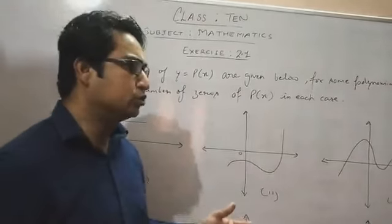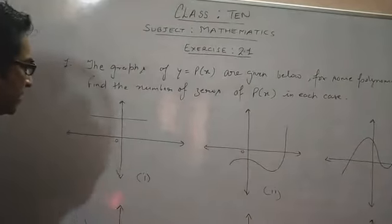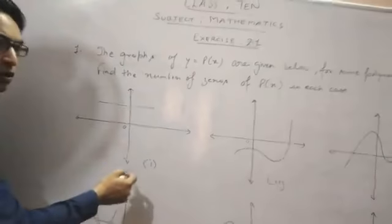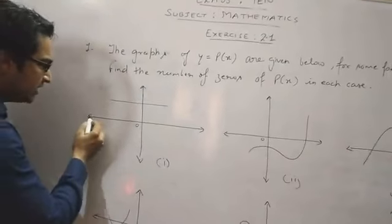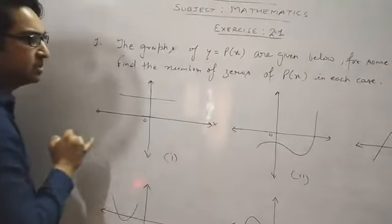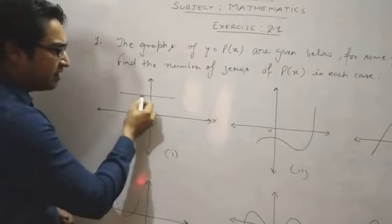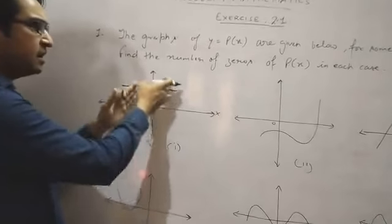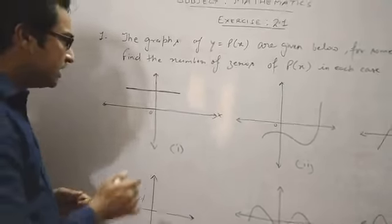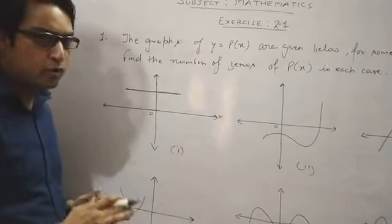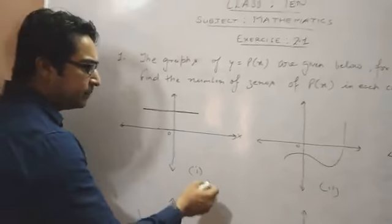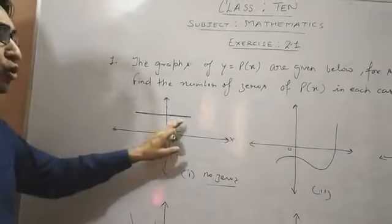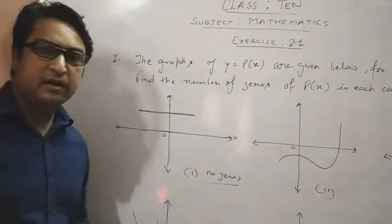Let's see the first part. Here we see the x-axis is horizontal and the y-axis is vertical on the Cartesian plane. This is a linear graph, and the x-axis is parallel. There is no intersection point on the x-axis. So there are no zeros. This has no zero.